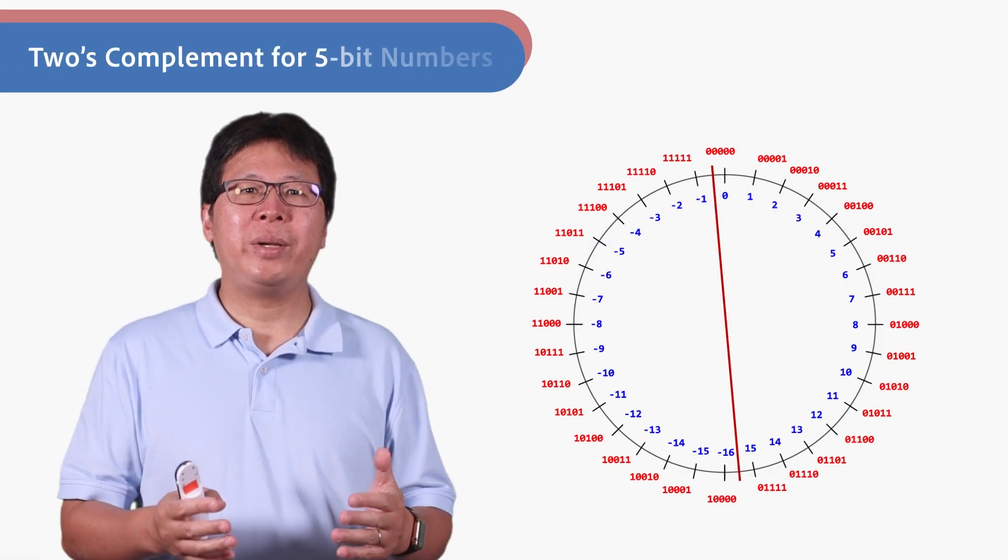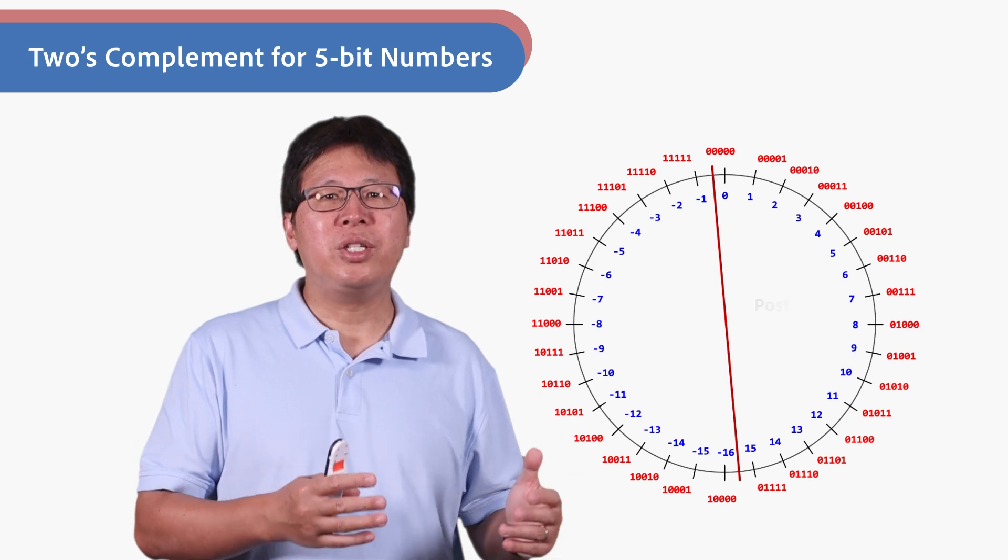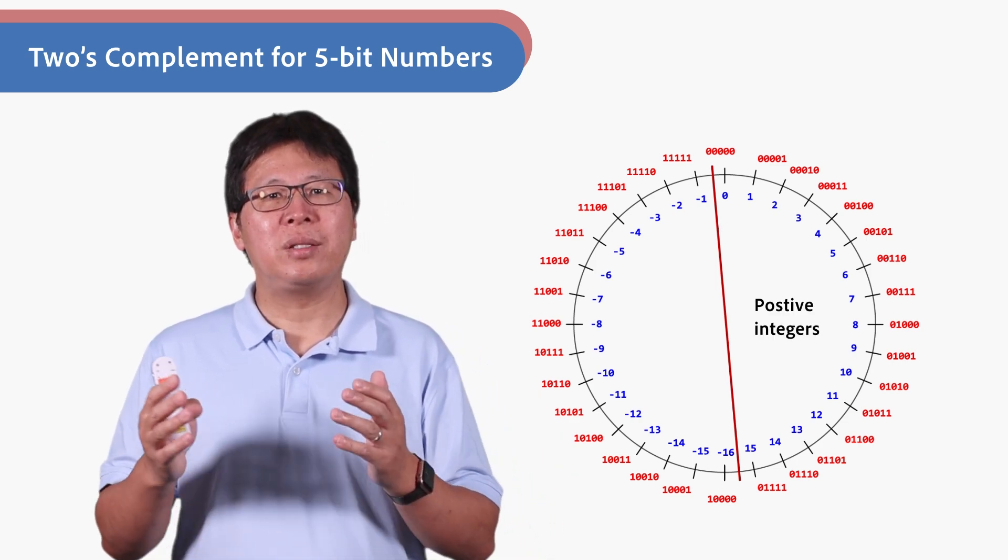This number wheel is the 5-bit two's complement integers. Positive numbers and zero are simply represented as themselves.